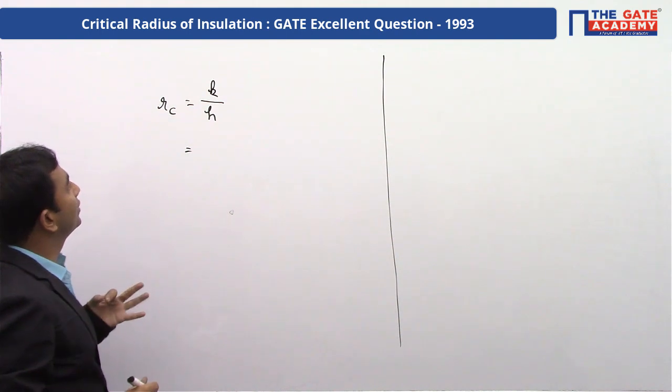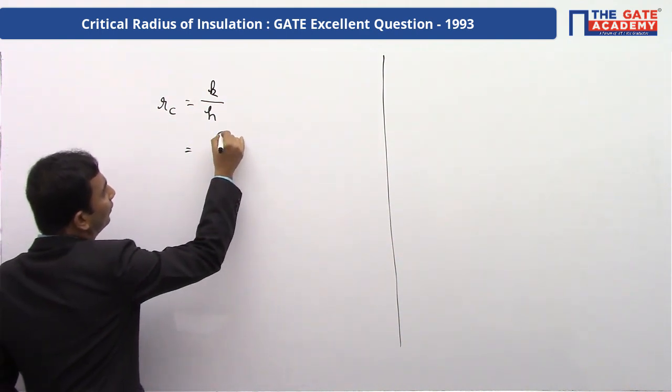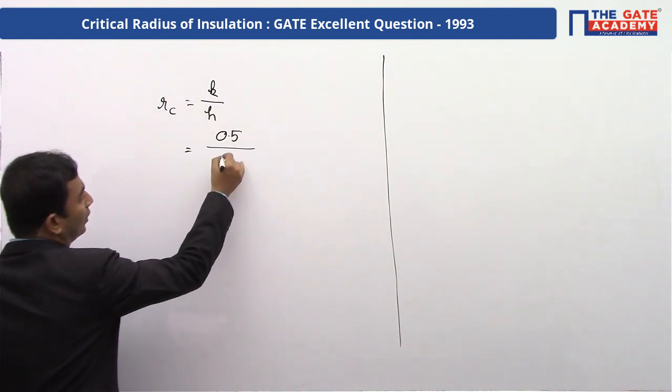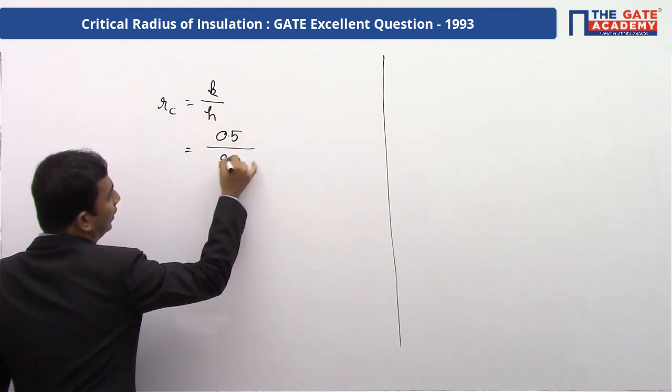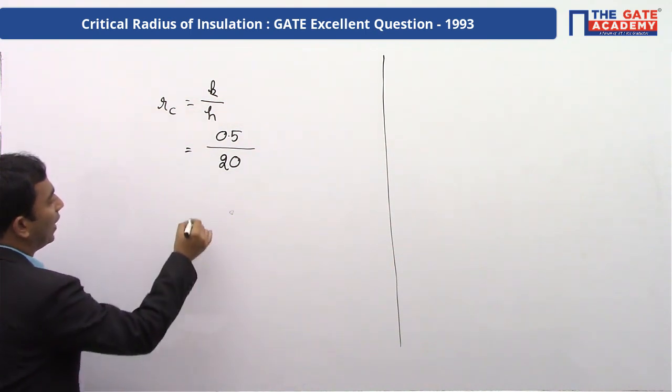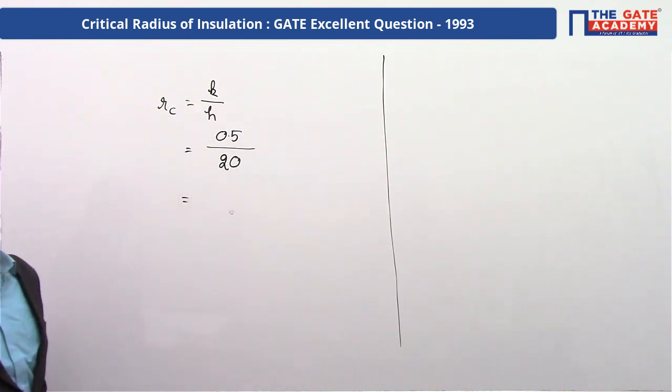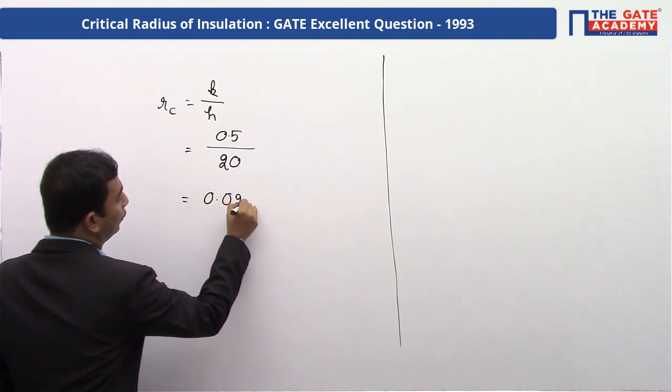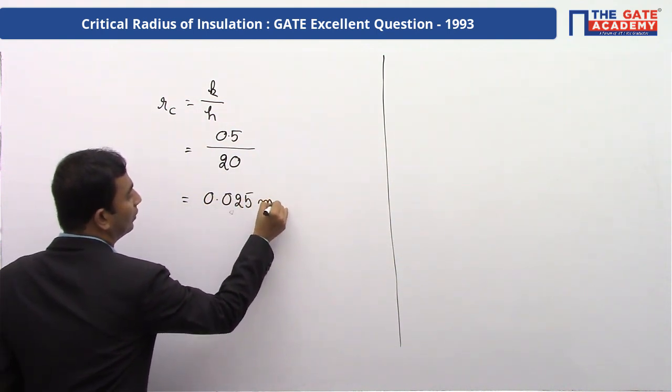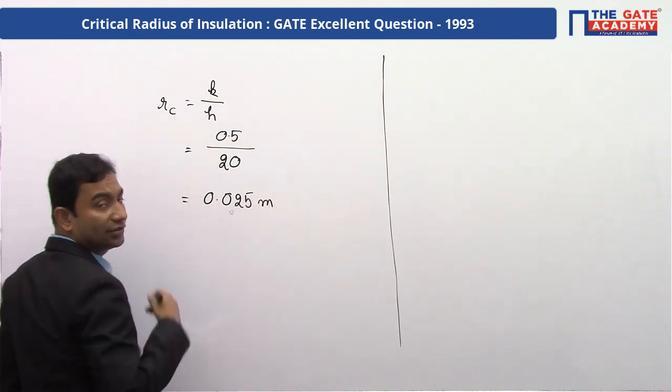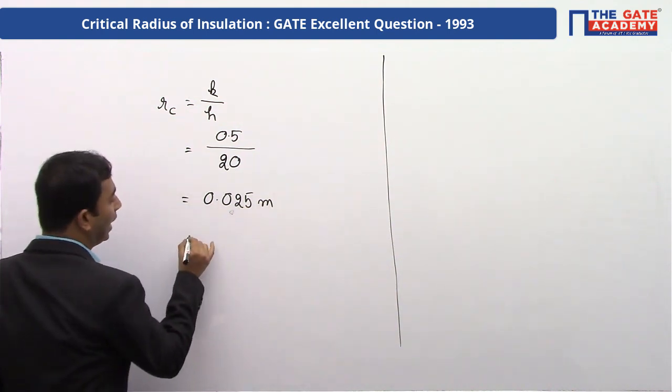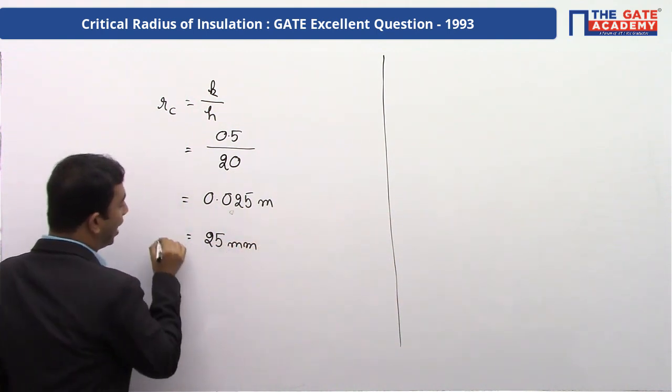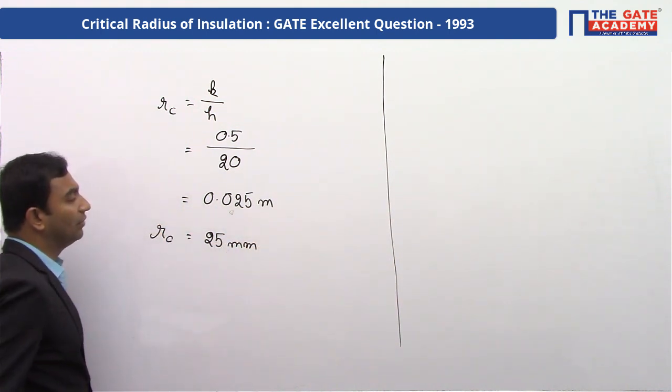K is given to us as 0.5 and H is given to us as 20. So, 0.5 divided by 20, we get 0.025 meter. If we convert this meter into millimeter, we will have 25 millimeter. RC is 25 millimeter.